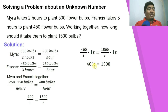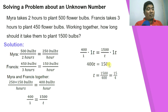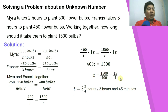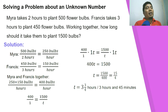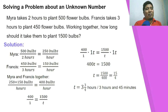Cross multiplying: 400t equals 1500. Dividing both sides by 400 gives t equals 1500 over 400, which simplifies to 15 over 4, or 3 and 3/4 hours. Since three-fourths of an hour is 45 minutes, the answer is 3 hours and 45 minutes. Working together, Myra and Francis can plant 1500 bulbs in 3 hours and 45 minutes.